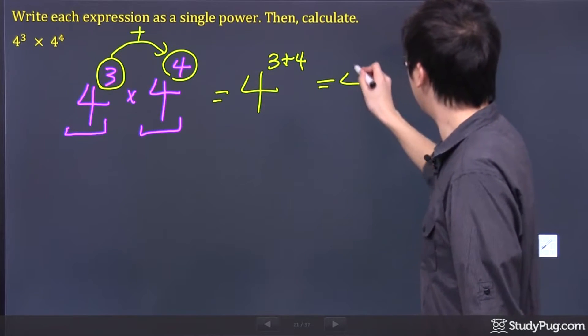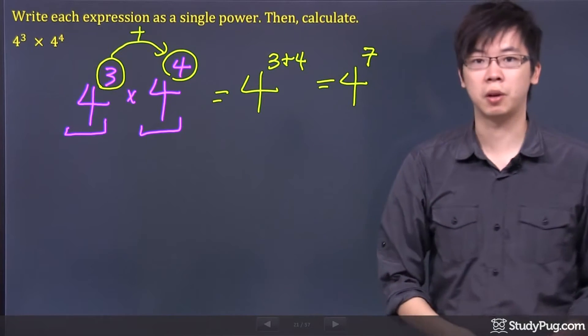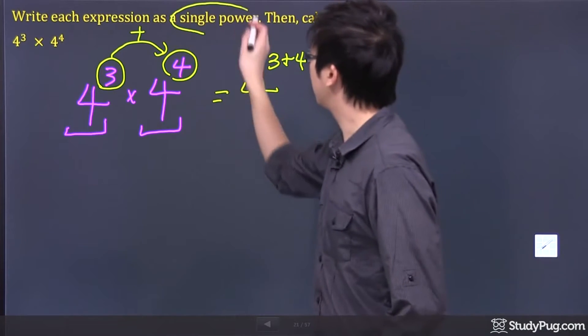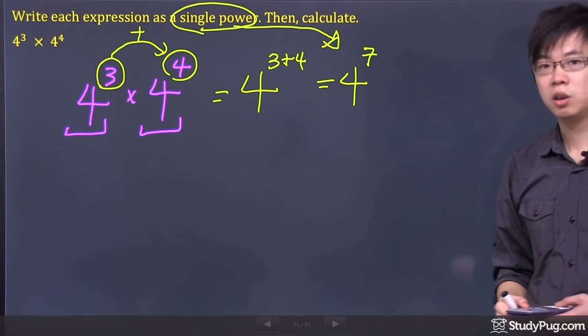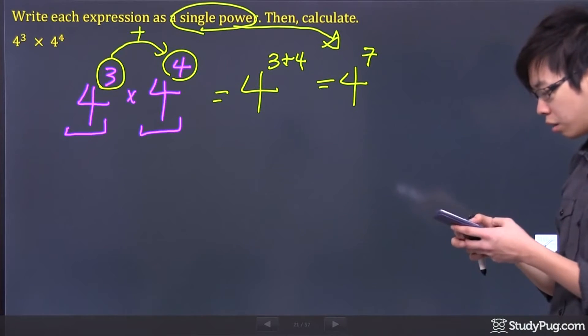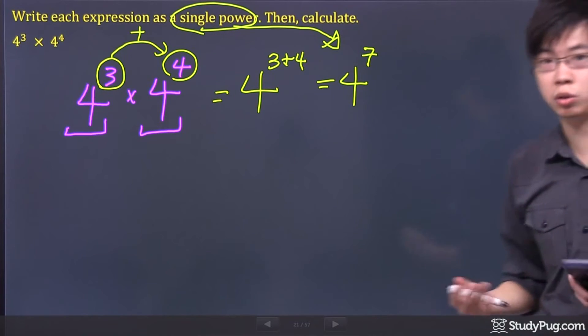It's just 4 to the power of 7. So it becomes your single power form, which is right there, and that's my little arrow sign. Which is 4 to the power of 7, and we use a calculator to help us because the number gets too big again.